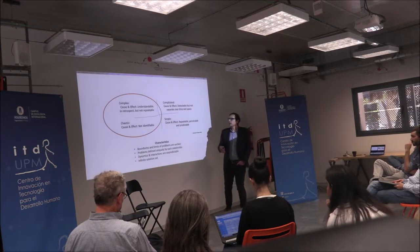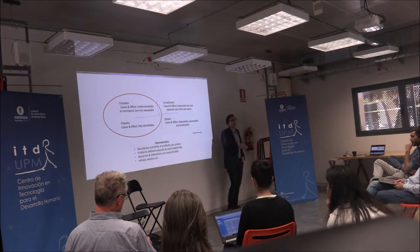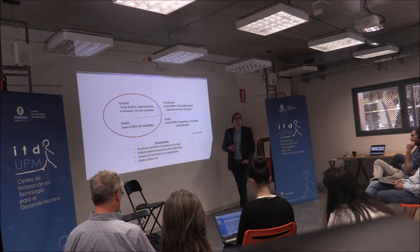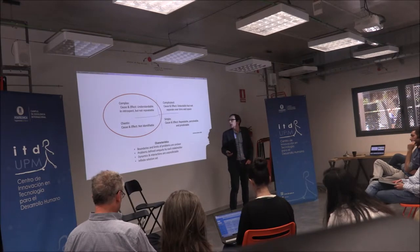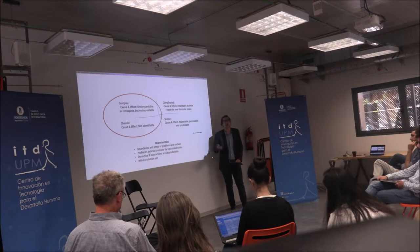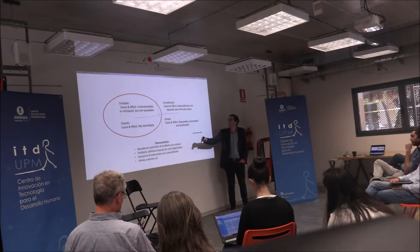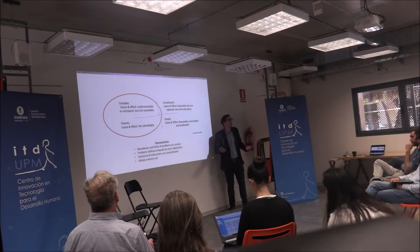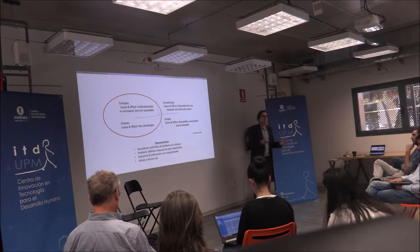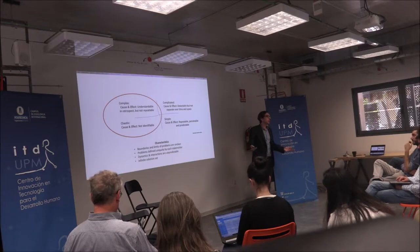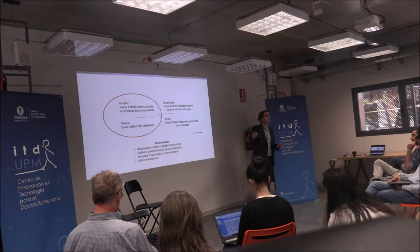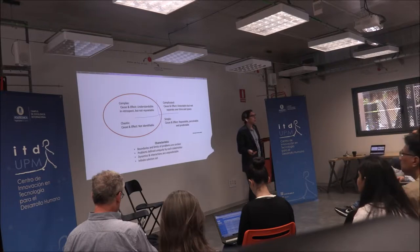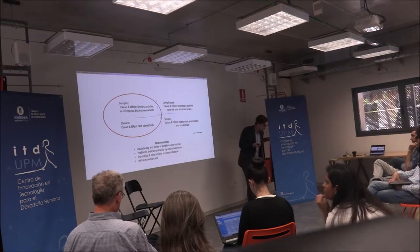The problem is that increasingly we understand that very few problems are actually isolated and that simple or complicated in nature. Rather, most of the problems we're facing — particularly in the development sphere and innovation sector — are complex at best, if not chaotic. These are quite different system types than complicated and simple. Why? Because the boundaries and limits of the problems aren't clear. We don't actually understand what the limits of the system are, which means we don't understand who all the stakeholders are. Think about something like global climate change, or deforestation in the Amazon.